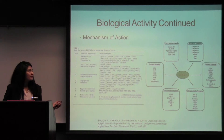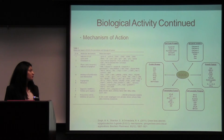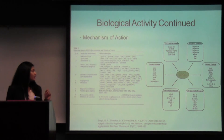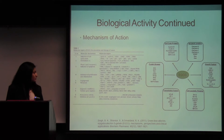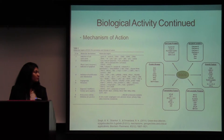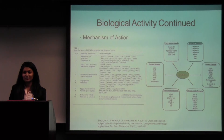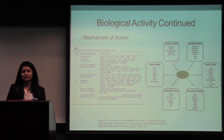Regarding biological activity, EGCG has a wide variety of targets in the body. This table shows some of the cancer targets it acts on, including a variety of transcription factors and protein kinases. For example, it decreases NF-κB, which we've talked about a lot in class. It also targets cyclins.